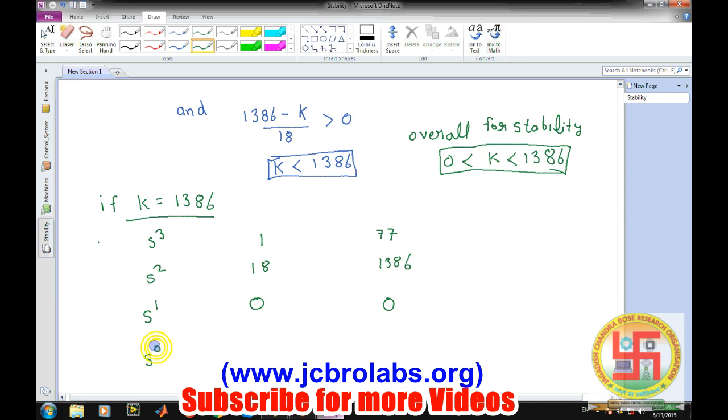What we'll do, as we discussed in our last class, we'll take a temporary polynomial based on the previous row of the row in which all elements are 0. So it is 18 s square plus 1386, and we differentiate this, dP/ds, it will become 36 s. So instead of 0 we will write here 36 and 0. S to the power 0 will be this times this divided by 36, so it will become simply 1386.